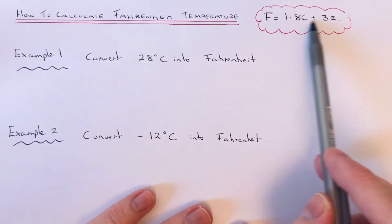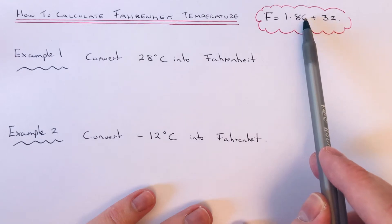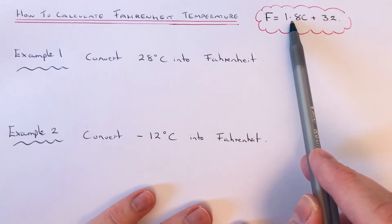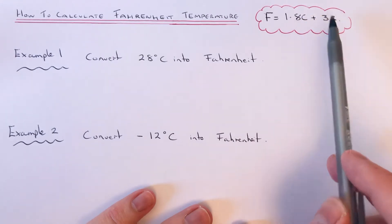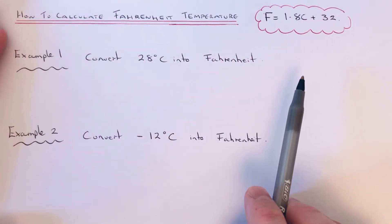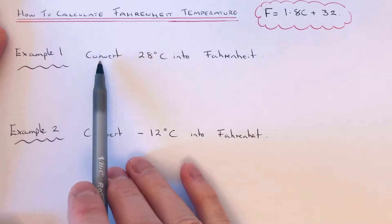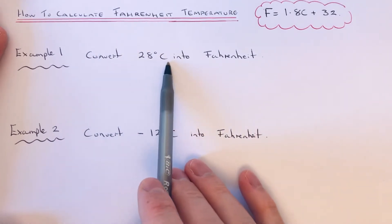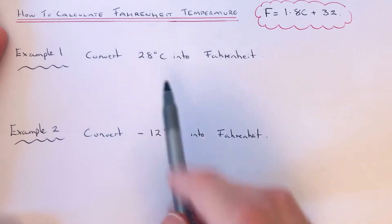What this formula is telling us to do is to multiply the temperature in Celsius by 1.8 and then add on 32. Let's have a look at the two examples that we have here. First of all, we're going to convert 28 degrees Celsius into Fahrenheit.